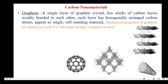Here we saw the classification of carbon nanomaterials based on dimension. The first one is graphene — it is a two-dimensional carbon nanomaterial. Graphene is nothing but a single layer of graphite. Graphite crystal has stacks of carbon layers weakly bound to each other. Each layer has exactly arranged carbon atoms, so it appears as a single self-standing material.